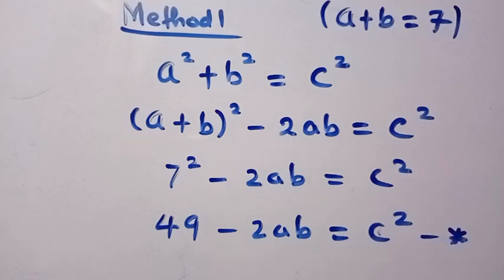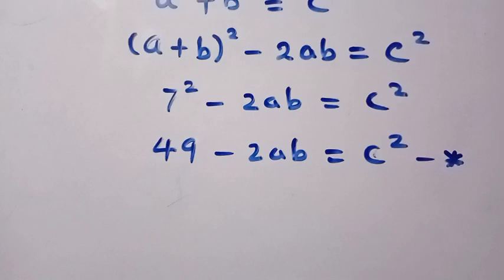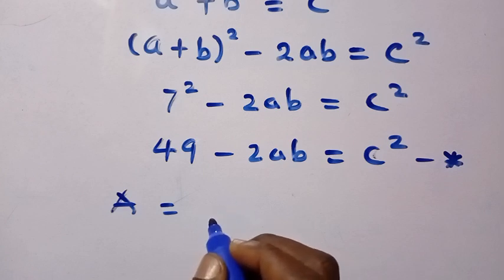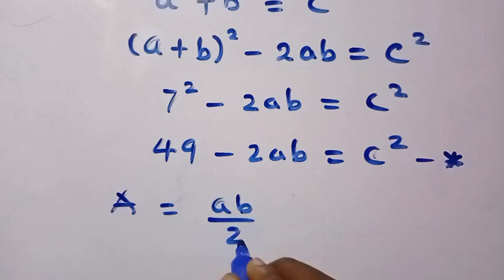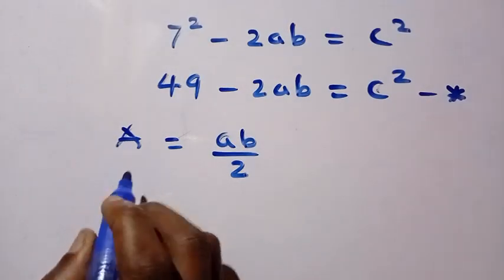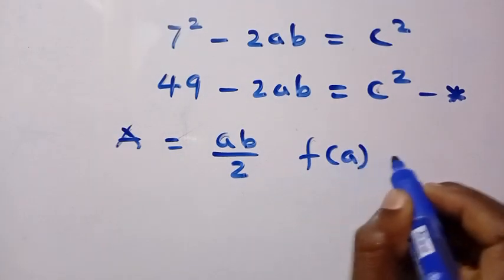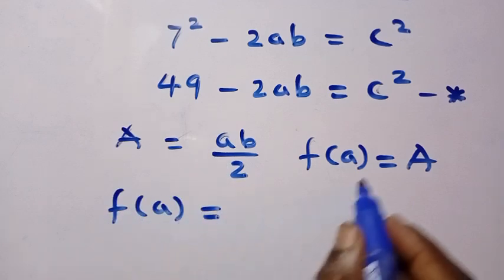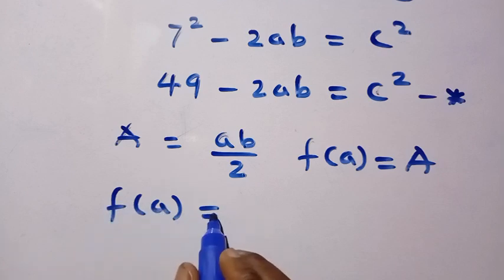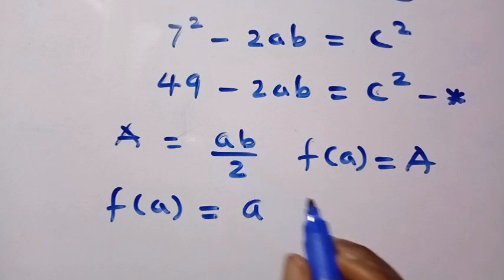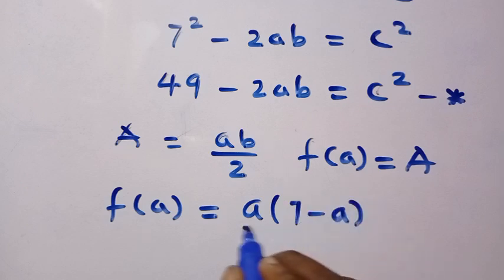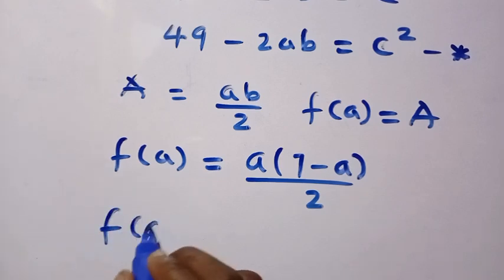Now we consider the area of the triangle, which is given as (1/2) × base × height. Since the base and height here are a and b, the area equals ab/2. We set up a function f(a) = ab/2. Since a + b = 7, we substitute b = 7 - a, giving f(a) = a(7 - a)/2.